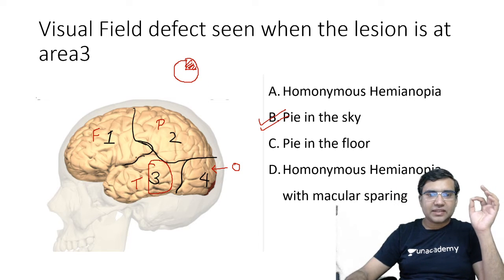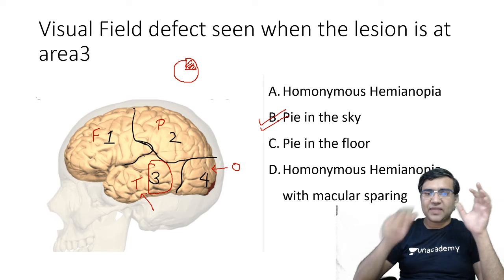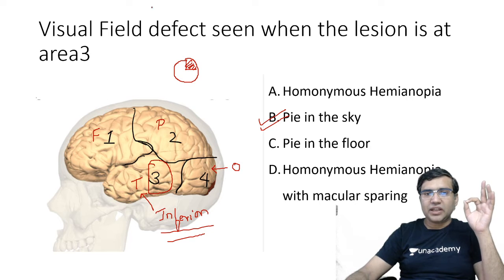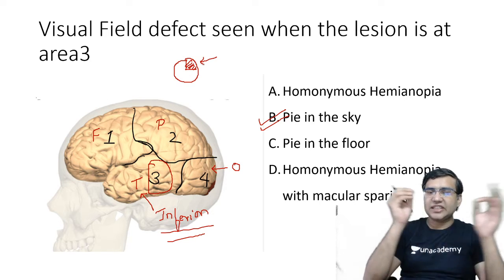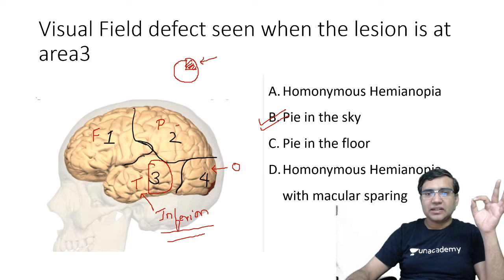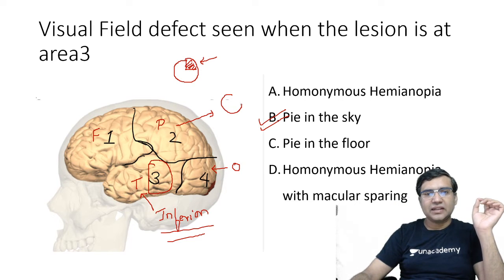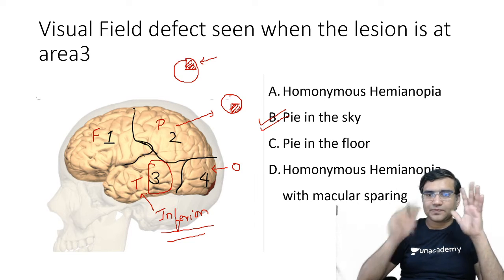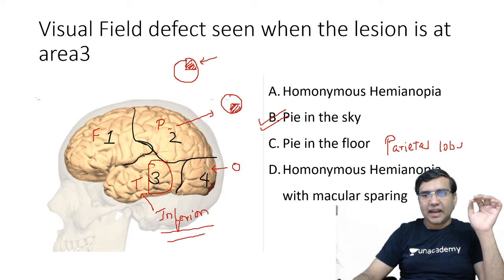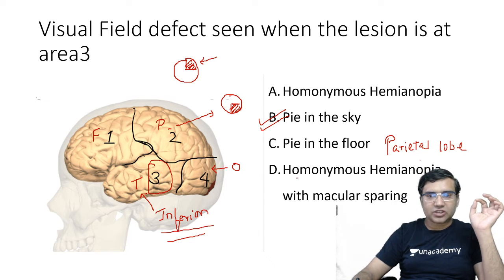We get a superior quadrant anopia whenever we have a lesion at the temporal lobe, because the inferior fibers are affected at that level. If they ask about the parietal lobe, then in parietal lobe there would be pie on the floor — that is option C. And whenever there is a lesion at the occipital lobe, it produces homonymous hemianopia with macular sparing.